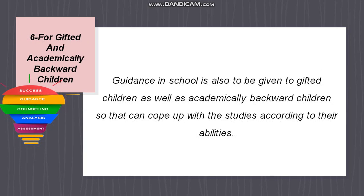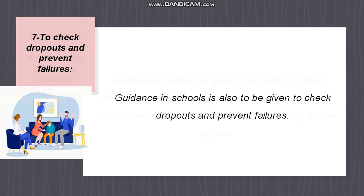Number six: for gifted and academically backward children. Guidance in school is also to be given to gifted children as well as academically backward children, so that they can cope with their studies according to their abilities. Number seven: to check dropouts and prevent failures. Guidance in schools is also given to check dropouts and prevent failure.